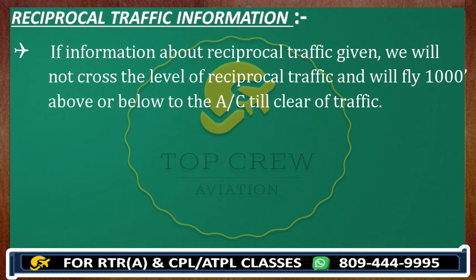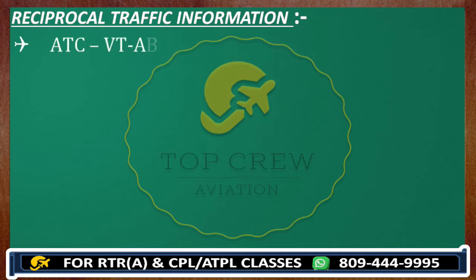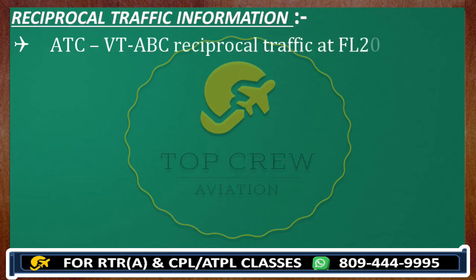For example, ATC can give you these kinds of situations while you appear for Part 1. Let's say ATC told you: Victor Tango Alpha Bravo Charlie, reciprocal traffic at flight level 200. Now let's say you were climbing — you wanted to climb higher, and now you came to know that reciprocal traffic is at flight level 200.